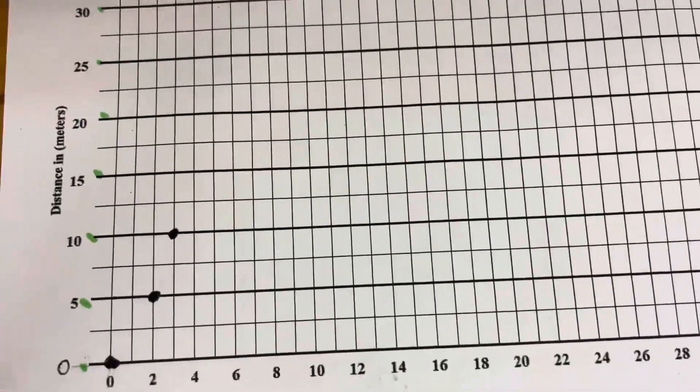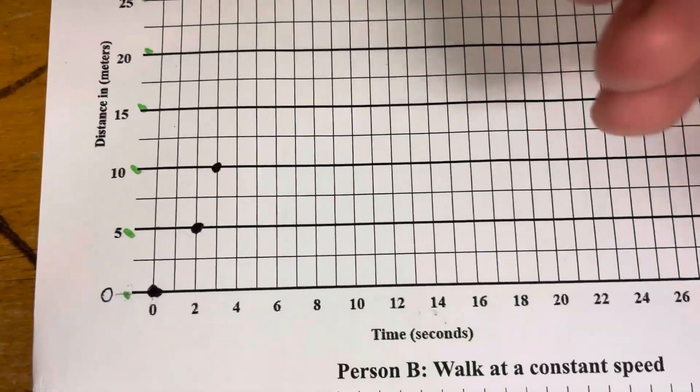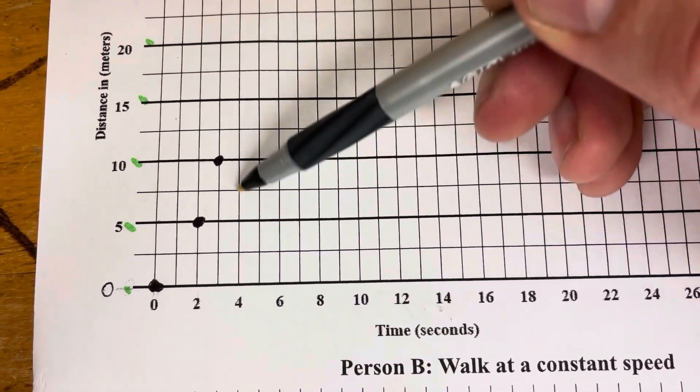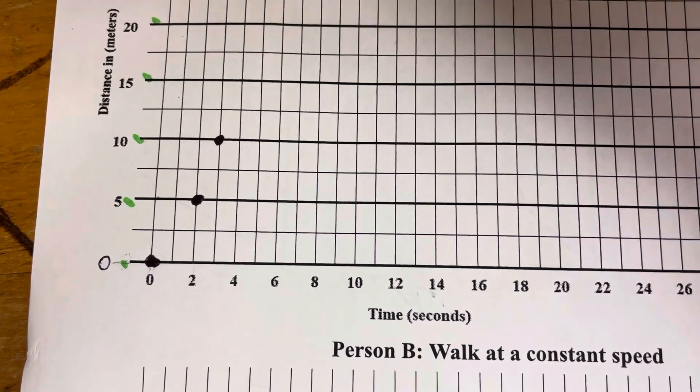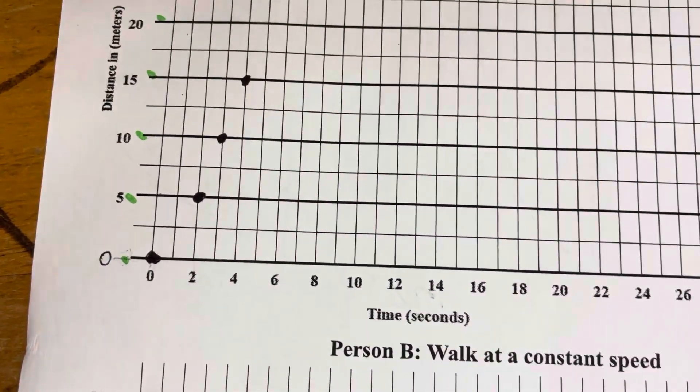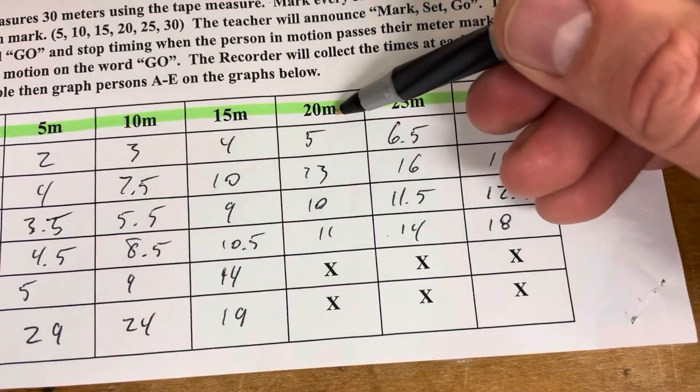Now we're going to go to 15 meters. Go up to that dark line that indicates 15 meters, then go over to the 4 second mark. You can see how I'm following that line. I'll put a nice big dark dot so it's easy to see, and I will eventually connect these dots.